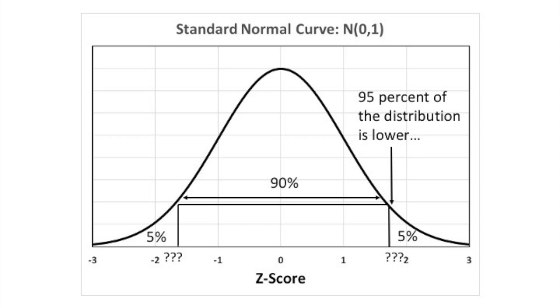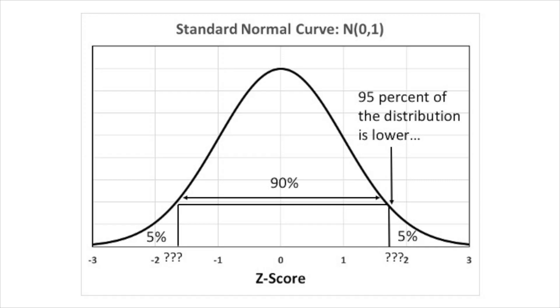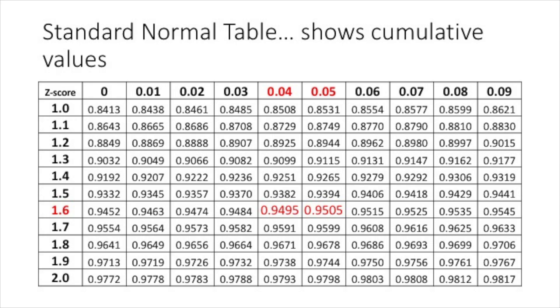Here's the standard normal curve — it's symmetric, single-peaked, and bell-shaped, centered at zero. I've put 5% in the right tail and 5% in the left tail, with question marks because we don't yet know the z-score that corresponds with the top and bottom 5% of the distribution. That leaves 90% in the center, which is what we're capturing for our confidence interval. When we go to the z-table, we'll actually be looking for the value 0.95, because the table shows cumulative percentages — so the top 5% of the curve corresponds to a cumulative value of 0.95.